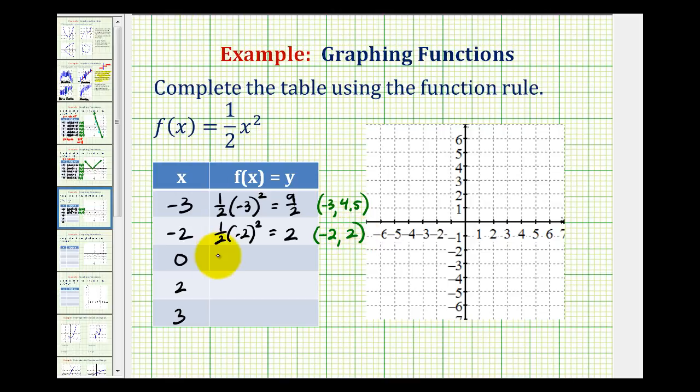When x equals zero, the function value, or y-value, would be one half times zero squared, which is just going to be zero. So the graph of the function contains the point zero, zero.